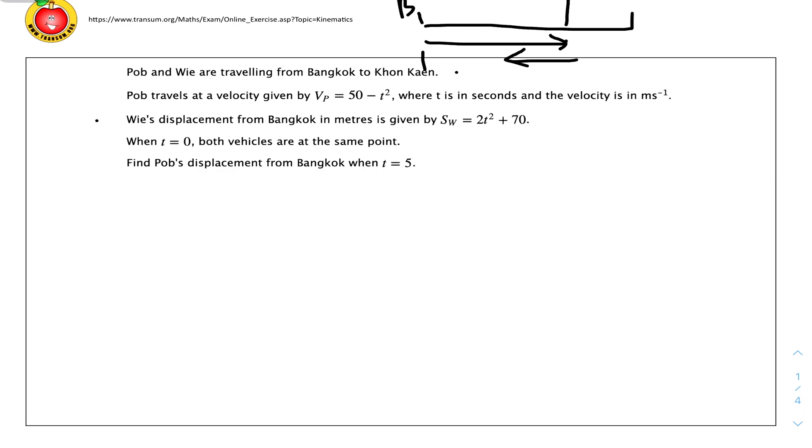This is important information: when t equals 0, both vehicles are at the same point. We know Wee's displacement from Bangkok in meters is given by sw equals 2t squared plus 70. When t equals 0, it will be 70 meters. That means when t equals 0, Wee's displacement from Bangkok is 70 meters, which also equals Pop's displacement when t equals 0.